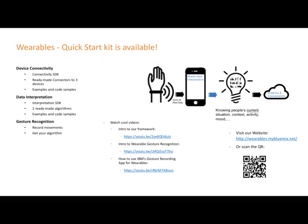A data abstraction layer assures that you don't need to modify your algorithms to accommodate different wearable device models. The Data Interpretation SDK helps you tune to the data that comes from wearable devices and translate it into better understanding of events, situations, and user context — exemplary interpretation algorithms are available out of the box. The gesture recognition feature provides an algorithm generator that makes gesture recognition as easy as possible, so you can turn on the lights with a wave of a hand and build such capabilities into your app.